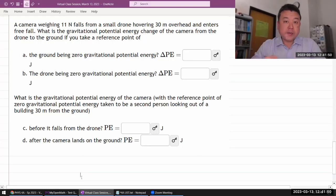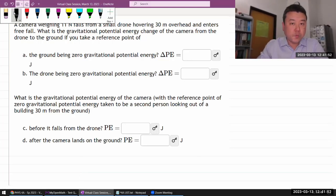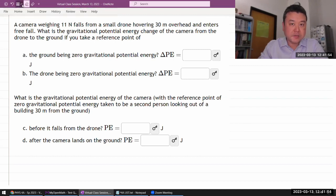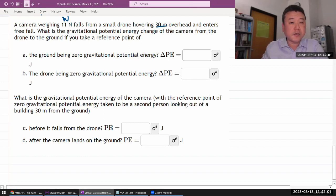It says a camera weighing some amount of weight. Let me give it a symbol, some weight, falls from a small drone hovering overhead. This is going to be some kind of height overhead and enters free fall.